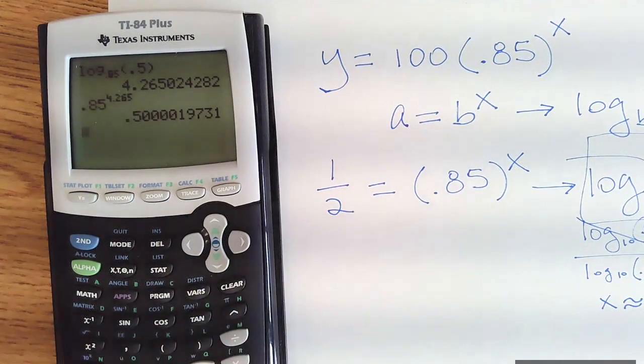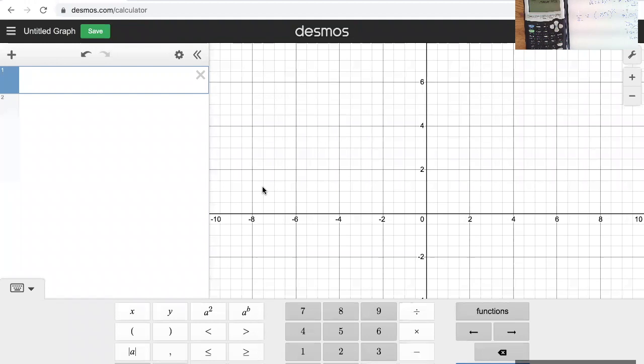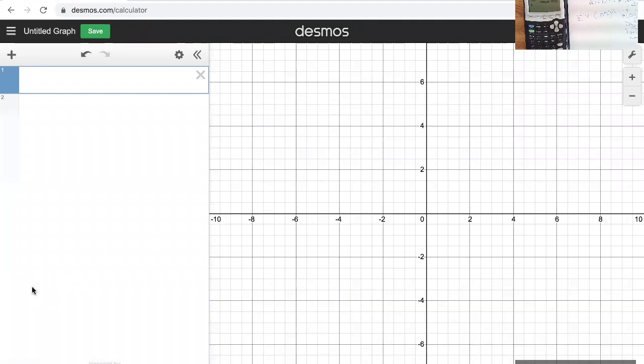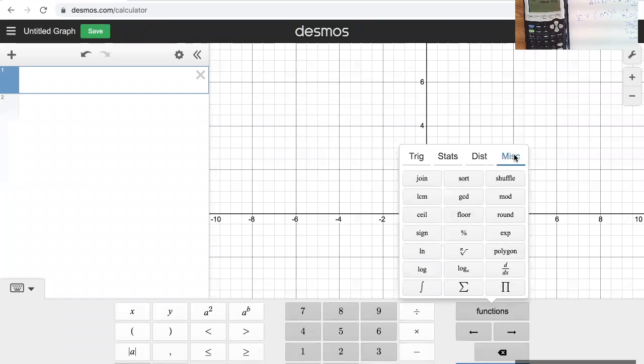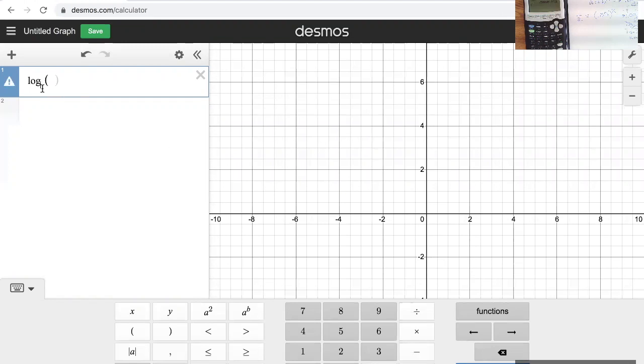Now, how can I do this on Desmos? On Desmos, I make sure I can open up my keypad. I scroll over to functions. I go to miscellaneous, and I scroll down. I notice there's log base 10. There's natural log base E. And here's a log base A, where I can define what A is. I click on that. And the first thing I have to enter is my new base. So my new base was 85 hundredths. I scroll over. I enter my half, which is my argument. And I get the same value as on the calculator, 4 and 26 hundredths or 4 and 265 thousandths.